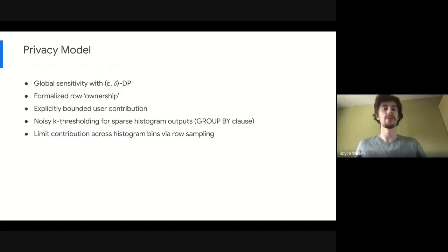Looking a little closer at the privacy model that we're introducing, we're using epsilon delta differential privacy. And specifically, we're using global sensitivity in the context of the aggregation functions. We have this formalized notion of row ownership or row attribution. So each row or each record in each table is owned by exactly one user, a user can own multiple rows. And this row ownership needs to be consistent across multiple tables to correctly support joins. And then we have our explicit model of contribution bounds. We bound contribution within individual rows, we bound contribution across histogram bins. And then finally, we do noisy thresholding to protect sparse histogram outputs.